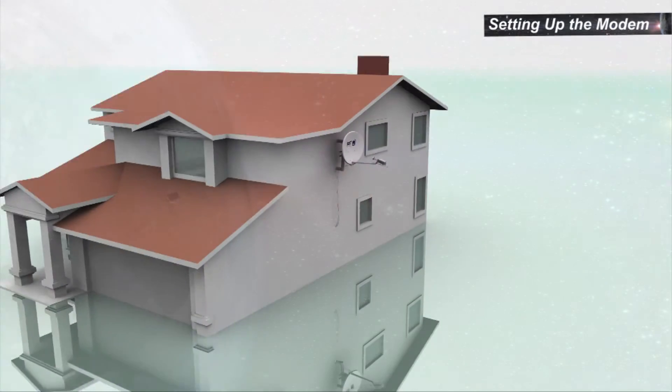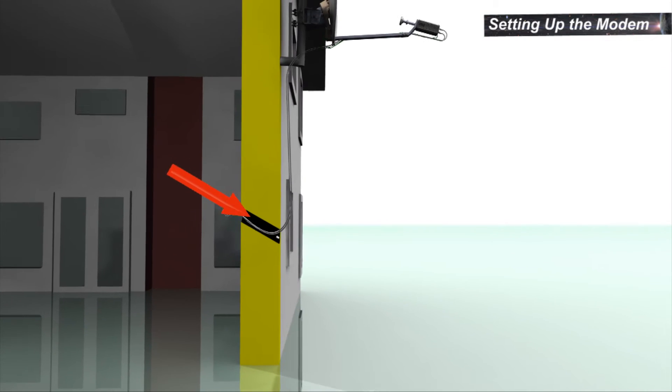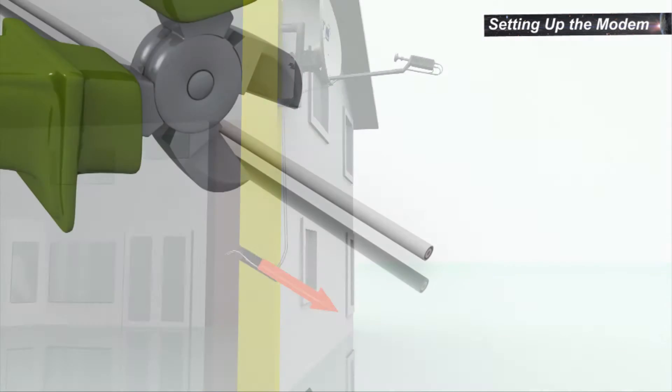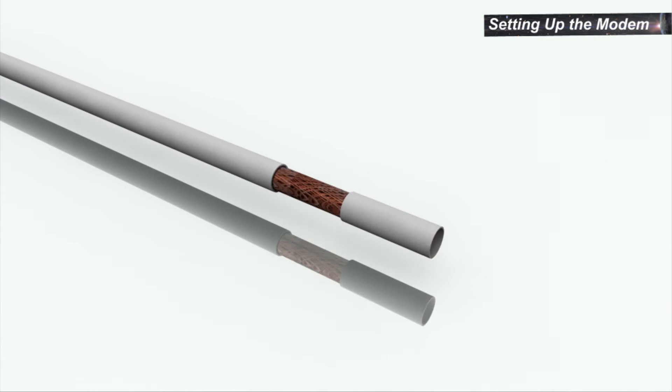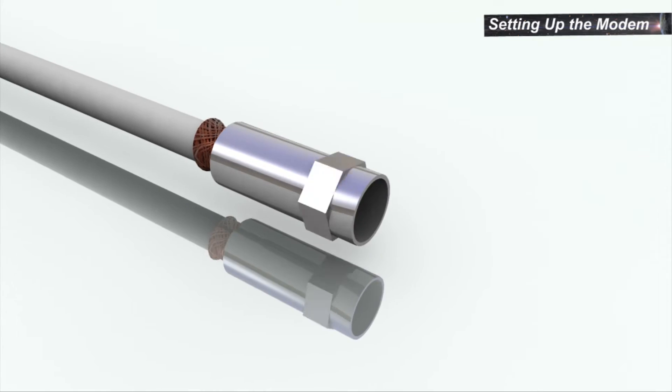The cable should be threaded into the house. The hole should be drilled pointing down to prevent rain penetration into the wall. Cut excess cable. Expose the braid. Fold back the braid. Expose the center wire. Screw on the connectors.